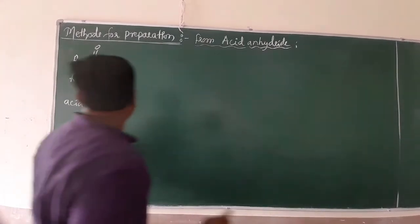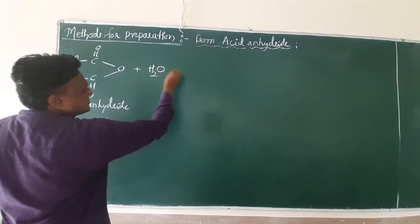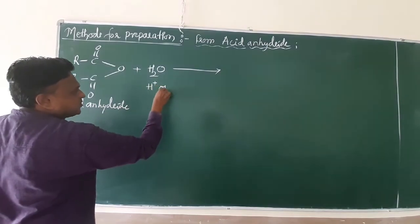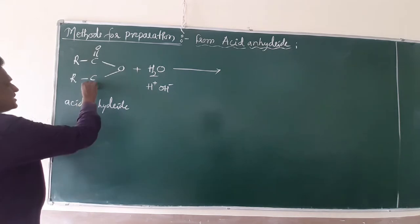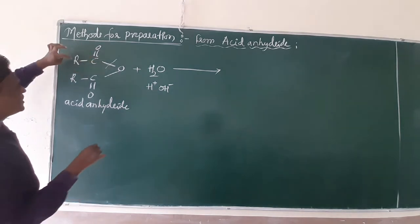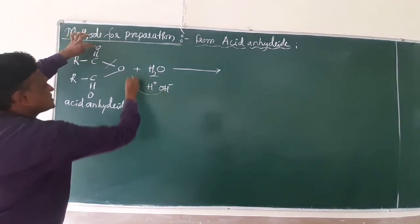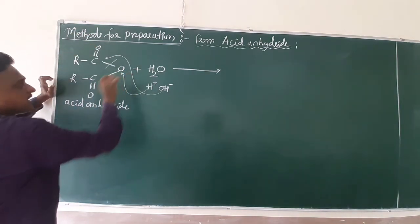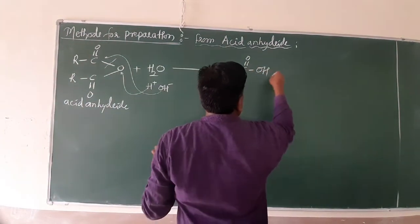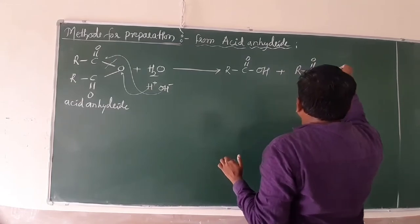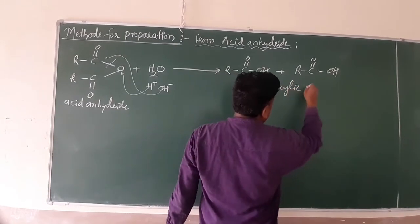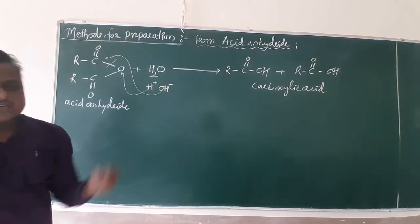Now for our main part: acid anhydride undergoes hydrolysis. With H⁺ and OH⁻, cleavage of one of the C–O bonds occurs. The OH attacks the carbonyl carbon, giving R-C(=O)-OH on both sides. So hydrolysis of acid anhydride gives 2 moles of carboxylic acid.